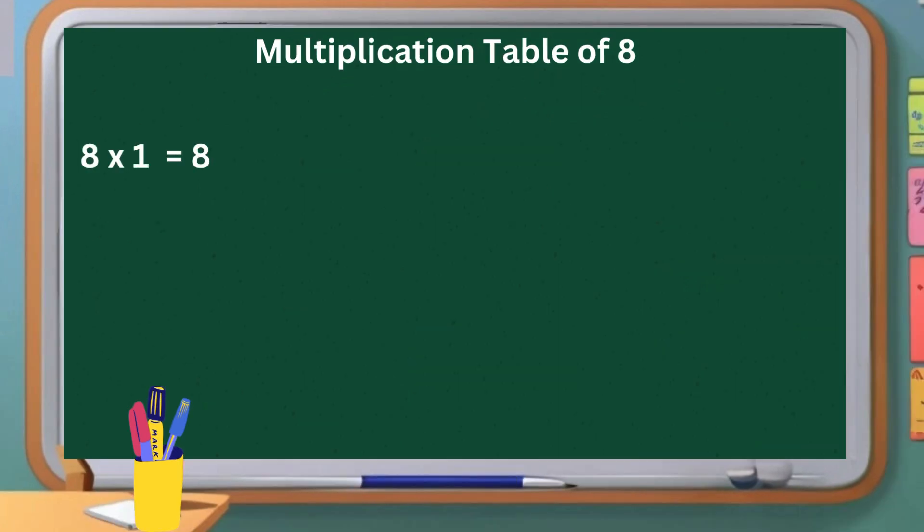Eight ones are eight. Eight twos are sixteen. Eight threes are twenty-four. Eight fours are thirty-two. Eight fives are forty.